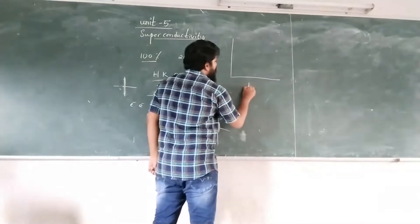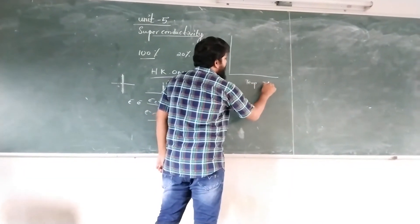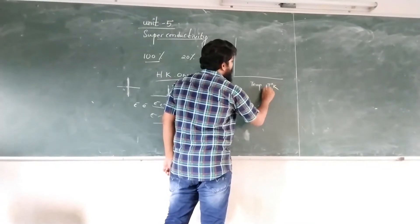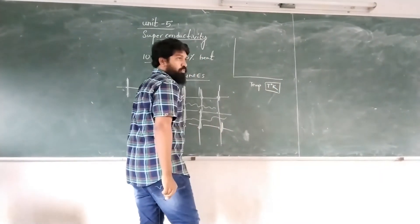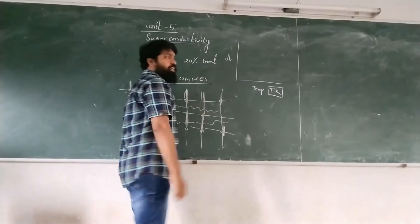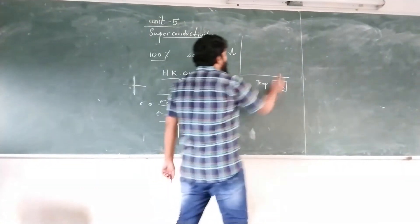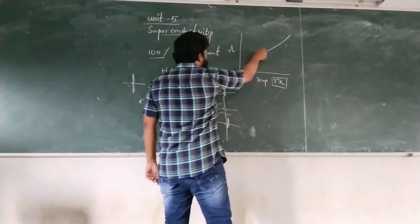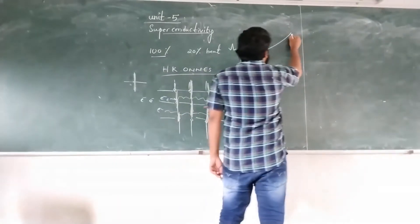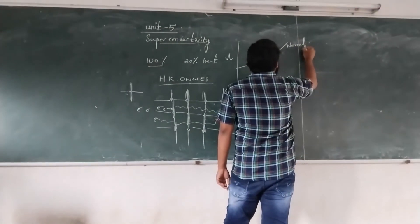For example, the graph will be resistance R on the y-axis, temperature T on the x-axis. T will be a little — what is the resistance? So this is a normal state, normal conductor.